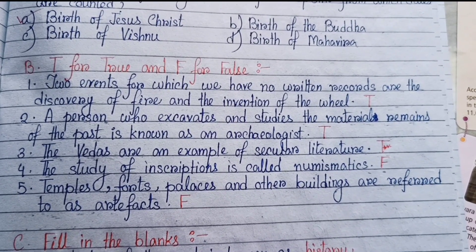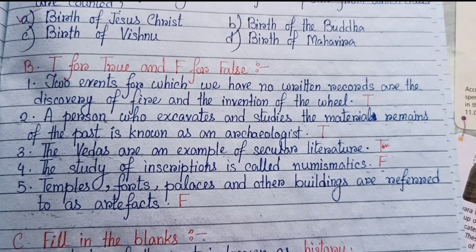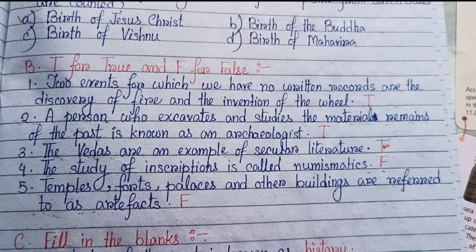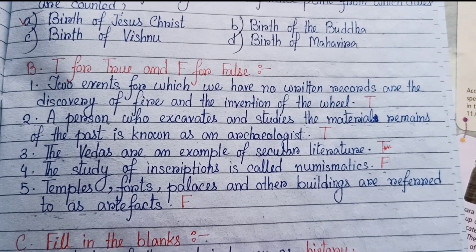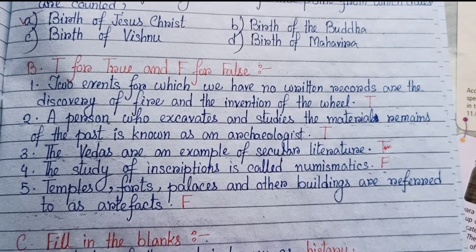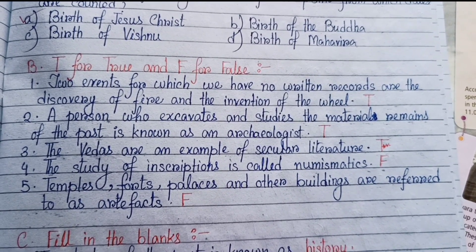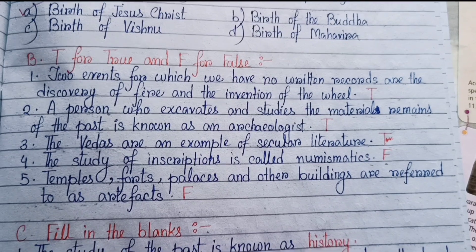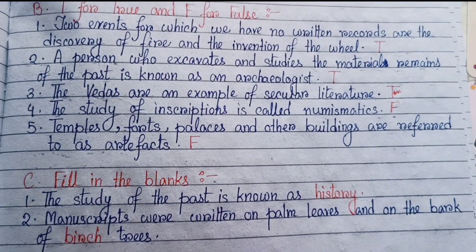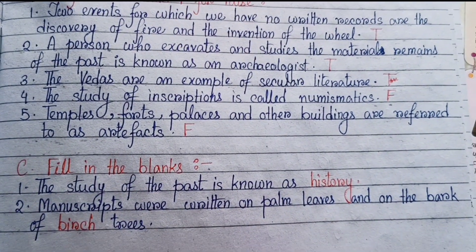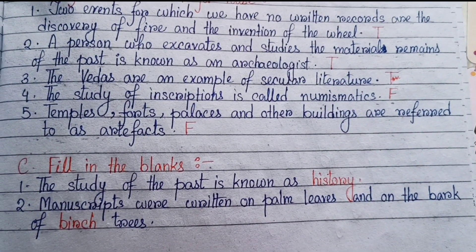Number three: the Vedas are an example of secular literature — False. Number four: the study of inscriptions is called numismatics — False. Number five: temples, forts, palaces and other buildings are referred to as artifacts — False.